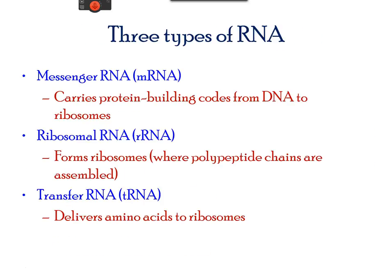There are three types of ribonucleic acid, each with a role within the central dogma. Messenger RNA brings a code from the DNA to the ribosome. Transfer RNA delivers the amino acids to the ribosomes, while ribosomal RNA is involved in the assembly of the ribosome.